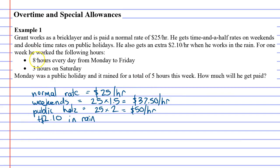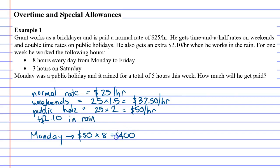He worked eight hours every day from Monday to Friday. Let's focus on Monday first, because Monday was a public holiday. So on Monday he got $50 an hour and he worked for eight hours, so 50 times 8 is $400 — that's what he got on Monday.